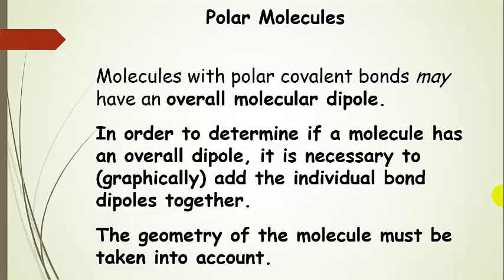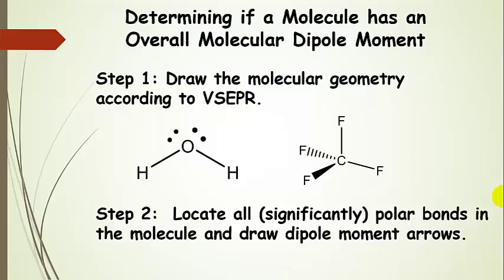Molecules can have polar covalent bonds and may have an overall molecular dipole, but they don't necessarily have to. In order to figure out if a molecule actually has an overall dipole, we have to graphically add the individual bond dipoles together. When we do this, we must take into account the geometry of the molecule. If you don't take geometry into account, you could get the wrong answer. The first step is to draw the molecular geometry according to VSEPR.